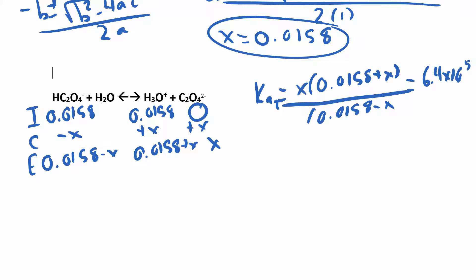This is equal to Ka2, which is 6.4 times 10 to the negative 5. What we can do is we can say that now, times 10 to the negative 5 - now this x is going to be small, so we can ignore those two x's. Which means I have x times 0.0158 over 0.0158. So these will cancel and x is just equal to Ka2, so that's 6.4 times 10 to the negative 5.